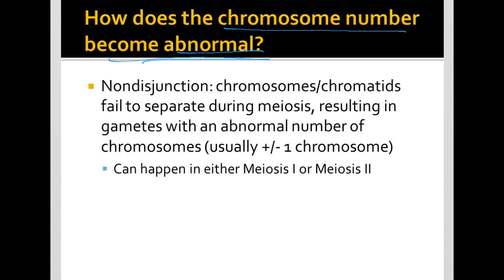Non-disjunction is the process by which chromosomes or chromatids fail to separate from each other during meiosis. That's going to be in one of those anaphases, either anaphase 1 or anaphase 2. When these fail to separate, this will result in gametes with an abnormal number of chromosomes.